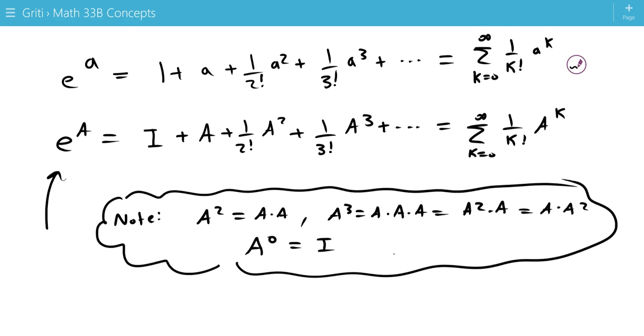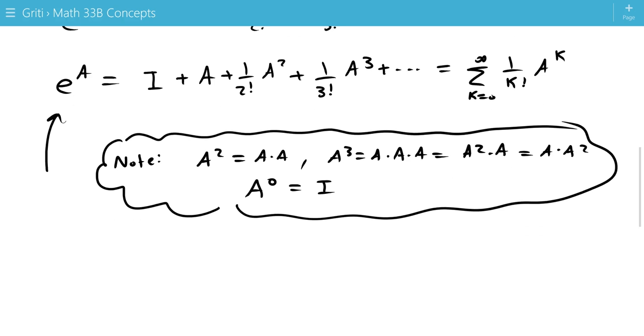So, e to the a does not exist for all matrices. Only for some matrices does the sum converge.